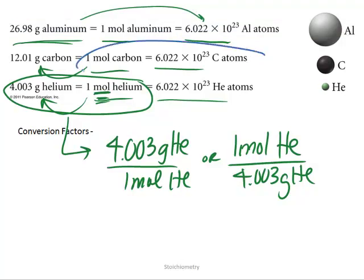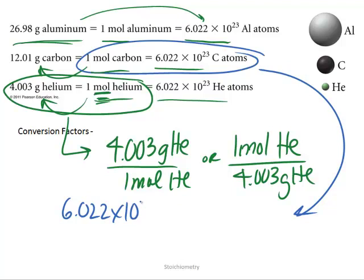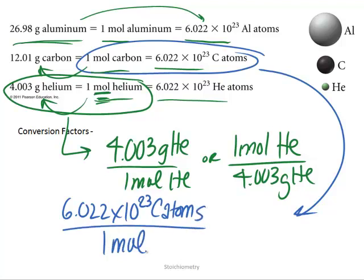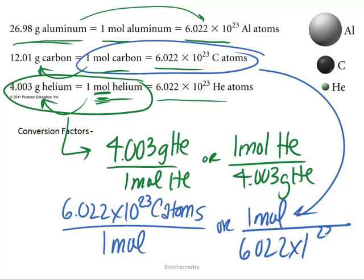If you want to convert moles to atoms or vice versa, you can of course draw two conversion factors for that. You know that there are 6.022 times 10 to the 23rd atoms in one mole, so that is the same for carbon. There are 6.022 times 10 to the 23rd carbon atoms in one mole, or you can say that in one mole there are 6.022 times 10 to the 23rd carbon atoms.